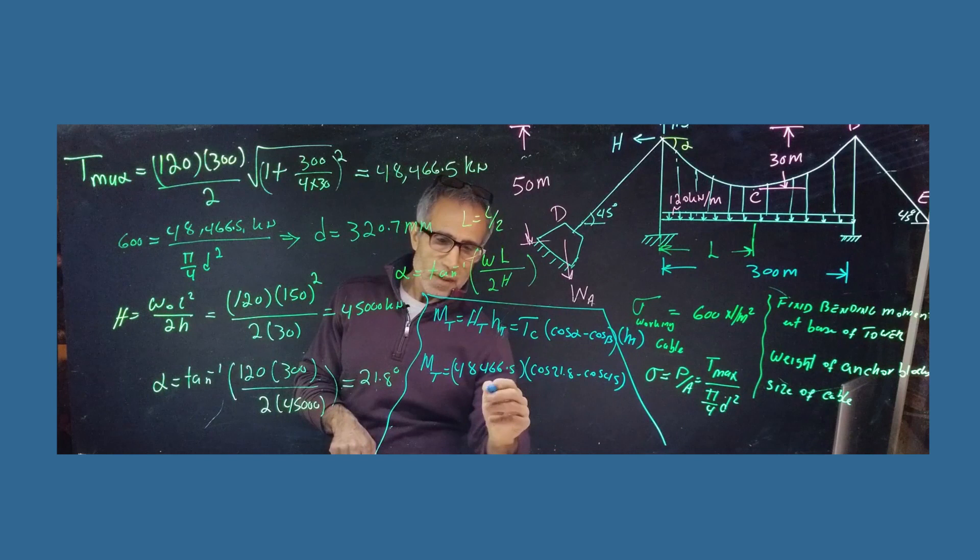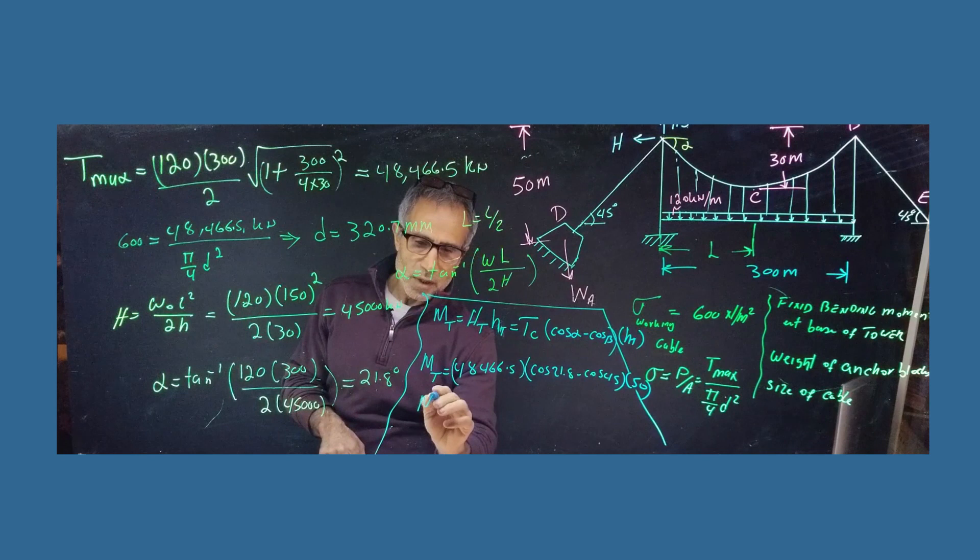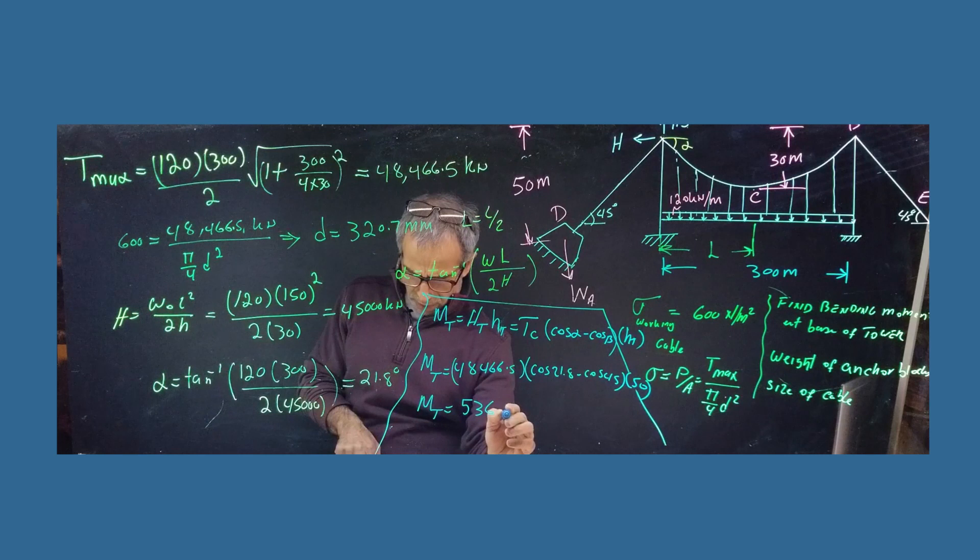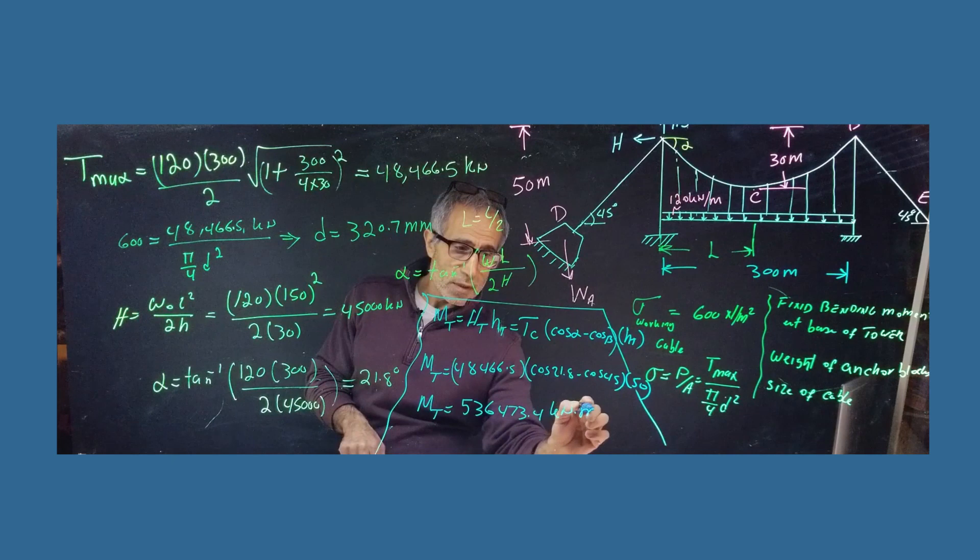48,466.5. And let's multiply that by cosine 21.8 minus cosine 45. And multiply the whole thing by HT. This distance was given as 50. I erased it. It's right here. It's 50. So that's 50 meter. Multiply by 50. So MT kind of come out to 53, 536 actually. And 473,000.4 kilonewton meter.